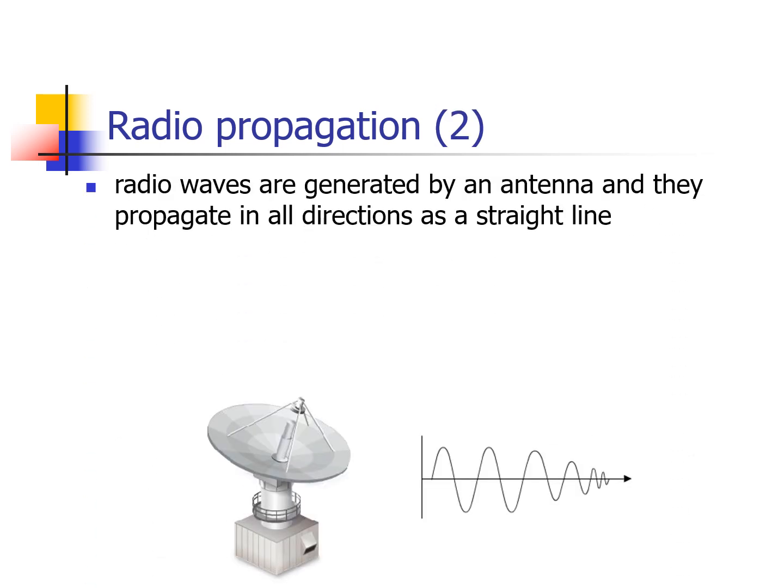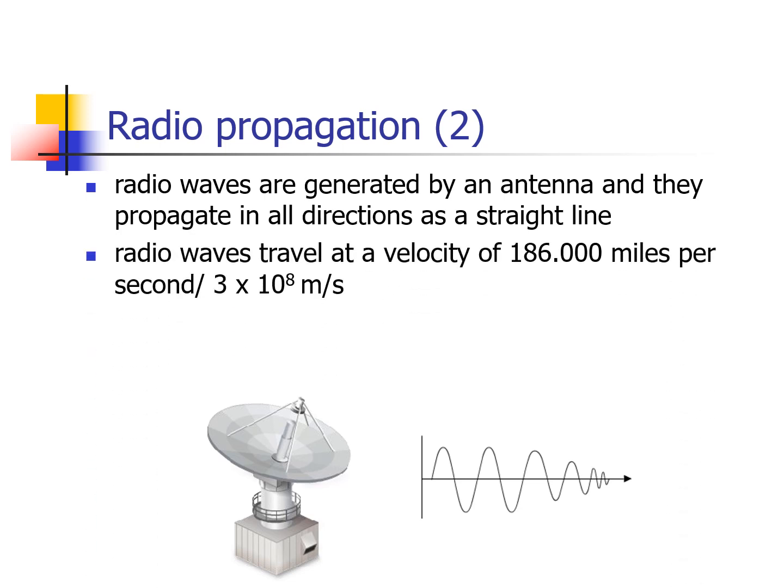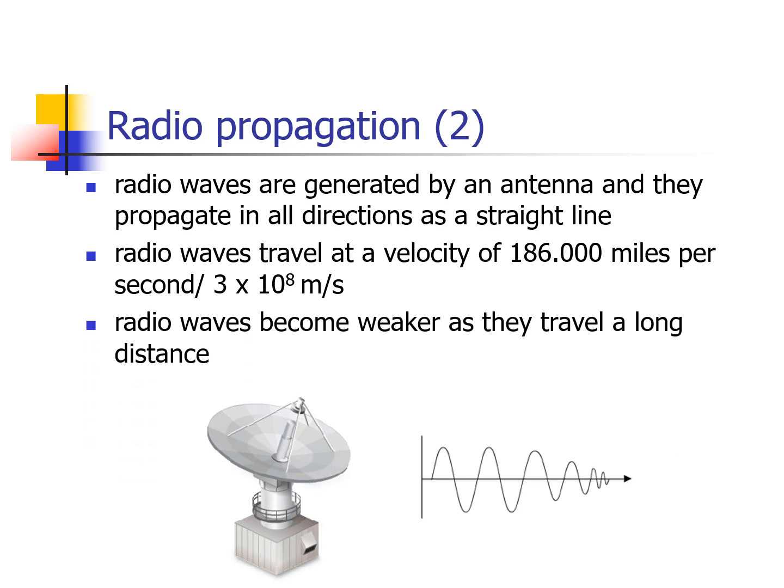As radio waves are generated by an antenna, they propagate in all directions as a straight line, similar to light. Light travels in a straight line. Radio waves travel at a velocity of 186 miles per second, or 3 x 10⁸ meters per second, the same as the speed of light, and radio waves become weaker as they travel over a long distance.